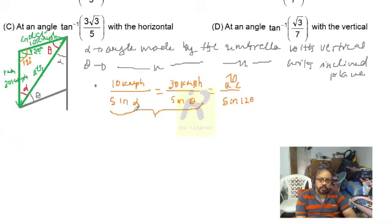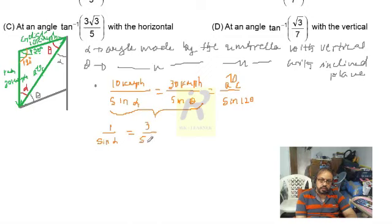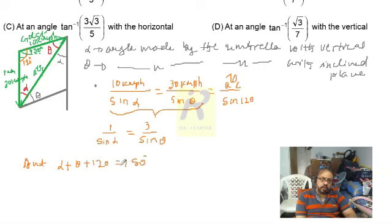On solving, we get 1 divided by sine alpha equals 3 divided by sine theta. One important relationship is that alpha plus theta plus 120 equals 180 degrees, which means alpha plus theta equals 60 degrees.